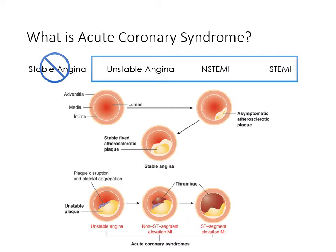A thrombus may occlude or severely narrow the vessel. You may also know that a thrombus may break off and travel to another organ such as the lungs causing a PE, or potentially, similarly if this was in the leg, something like a DVT.